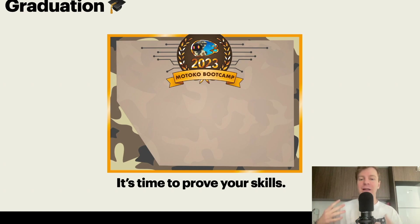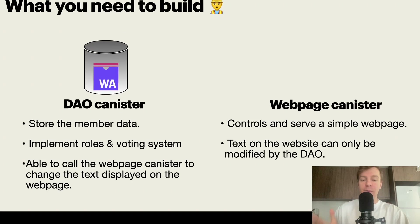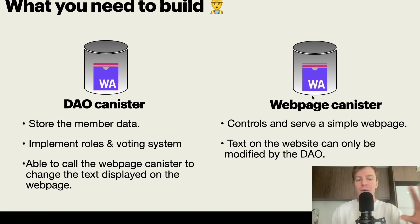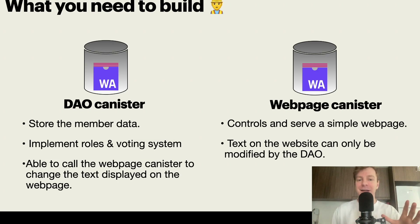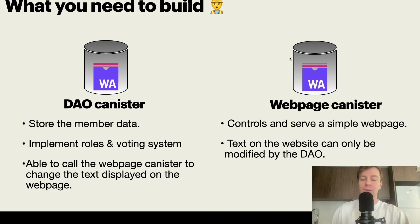If you can make it, you will unlock access to your Motoko Bootcamp diploma. So for the first time, we need to build a multi-canister application. On the right you can see the webpage canister, which controls and serves a simple webpage. This webpage contains some text — the manifesto of your DAO. The DAO canister on the left is the main canister, where you will store member data and implement a voting system and a role system. The DAO canister is the only entity able to modify the text on the webpage canister, so only through a vote of the DAO can the webpage canister be modified.